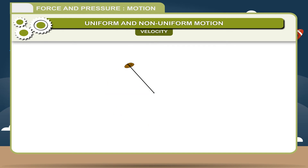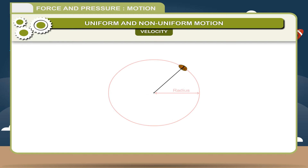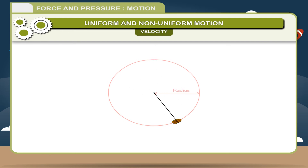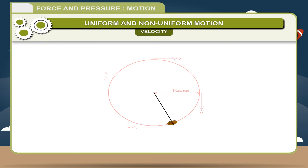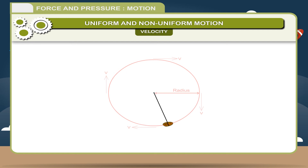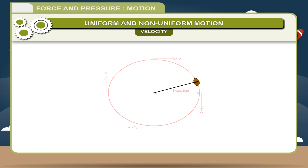In the figure, a stone tied to a string is moving in a circle of radius equal to the length of the string. At each point of the circle, the speed of the stone is the same but its direction is different, hence its velocity is different. A change in direction also changes the velocity, though the speed may remain the same. A body is said to have constant velocity if its speed as well as direction of motion do not change with time.